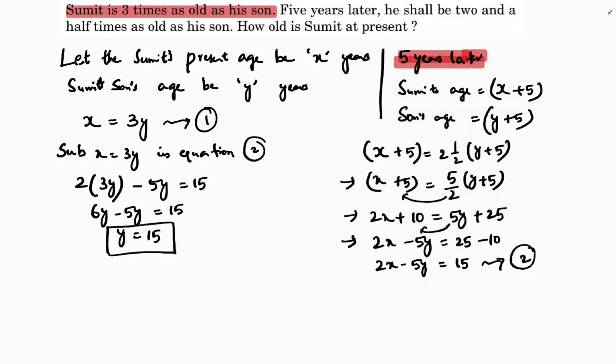So son's age is 15 years old. And X is three times Y. So X equals three times 15 which is 45 years.